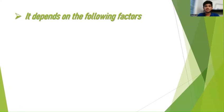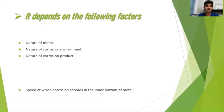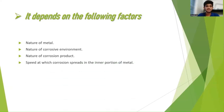The corrosion penetration rate depends on the following factors: first, the nature of a metal; second, the nature of a corrosive environment; third, the nature of a corrosion product; and fourth, the speed at which corrosion spreads in the inner portion of a metal.